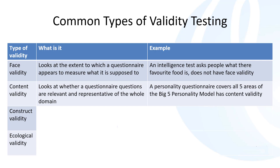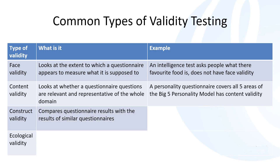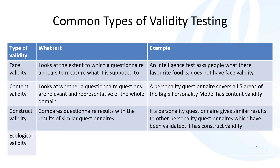The next type of validity is construct validity, which compares questionnaire results with the results of similar questionnaires. We would expect similar results from similar questionnaires if our results are valid and truly measuring what they purport to measure. So if a personality questionnaire gives similar results to other validated personality questionnaires, it would have construct validity — a newly developed questionnaire should produce similar results to already validated ones.